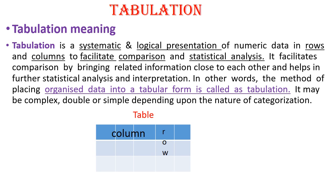This tabular form may be complex, double, or simple depending upon the nature of categorization. Normally, classified data are arranged in the form of rows and columns. Because in tables, they have rows and columns so that we can easily compare them with each other, and hence it is useful for analyzing statistical data.